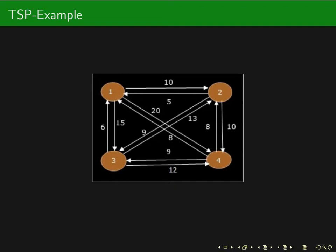Our task is to find a minimum cost path from a starting vertex that visits all other vertices exactly once and returns to the starting vertex. For example, I can start at vertex one, go to two, then go to four, then go to three, and then come back to one. This is a feasible solution.